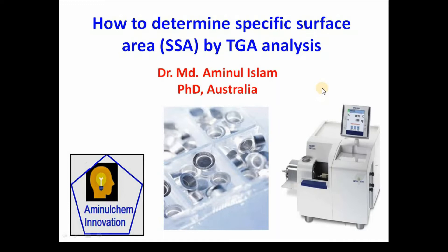In my previous video, I explained what specific surface area is and how to determine specific surface area using the Brunauer-Emmett-Teller (BET) isotherm method. I also showed how to determine specific surface area using the Ethylene Glycol Absorption method. In this video, I will show you how to determine specific surface area by Thermogravimetric Analysis.